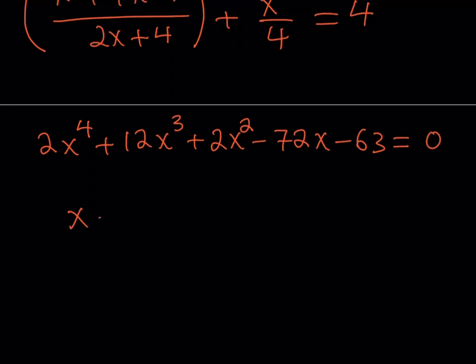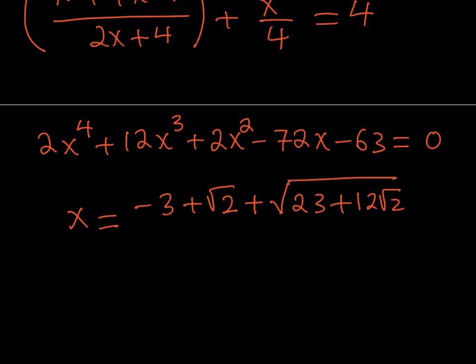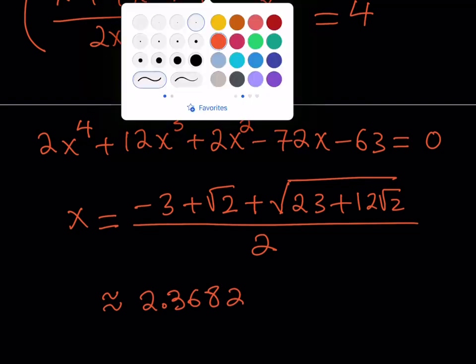So the x value that results from here is going to look like the following: x equals negative three plus the square root of two plus the square root of 23 plus 12 times the square root of two, and all of that divided by two. Isn't that awesome? And if you approximate this value, this is going to be approximately 2.3682, which makes sense if you look at the picture again.